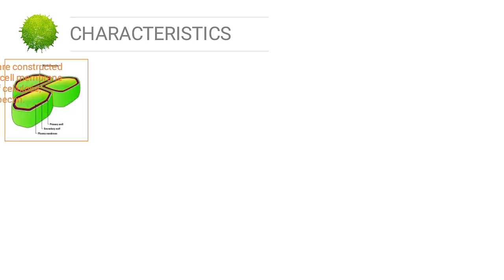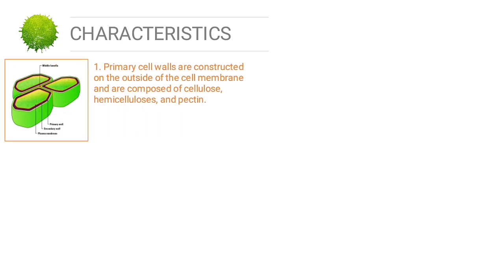There are six characteristics of plant cells. First, plant primary cell walls are constructed on the outside of the membrane and are composed of cellulose, hemicellulose, and pectin. This contrasts with the cell walls of fungi, which are made of chitin; of bacteria, which are made of peptidoglycan; and of archaea, which are made of pseudopeptidoglycan.